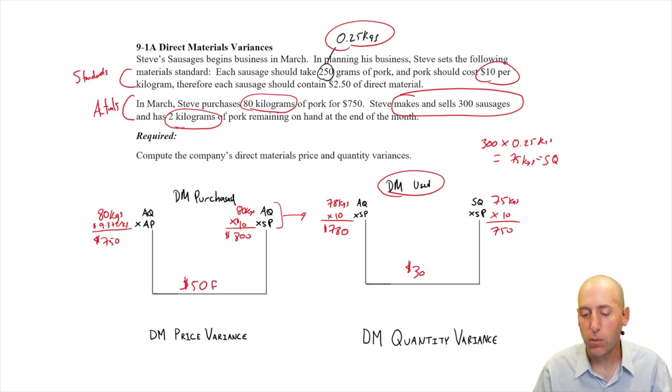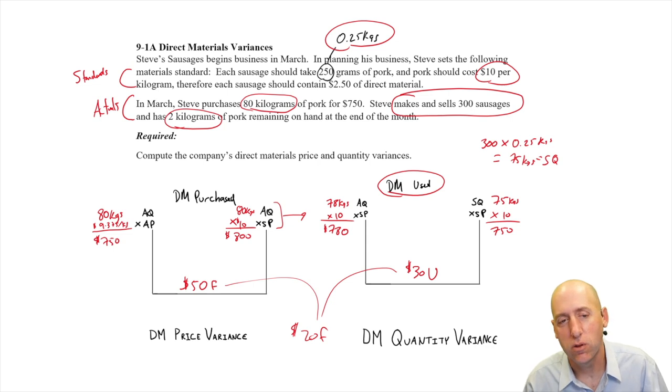Well, we would expect to use 75 kilograms. We actually used 78 kilograms. This is an unfavorable variance. We have overused our material. Now, our overall variance here is $20 favorable, but it's not all good news. We may have gotten a cheaper cut of meat, which has caused us to be a little bit more wasteful, or we may have gotten a great cut of meat and we might've just been wasteful.